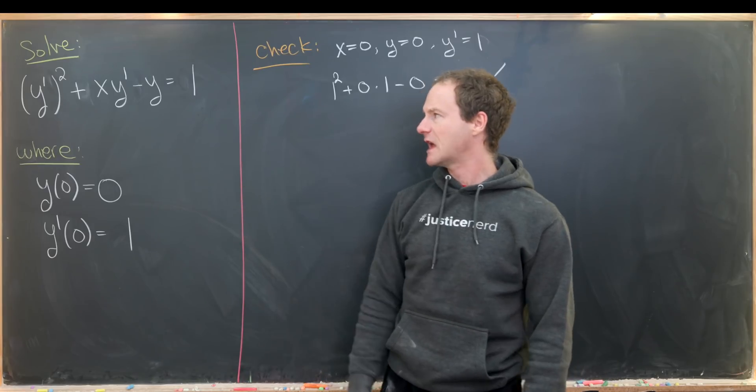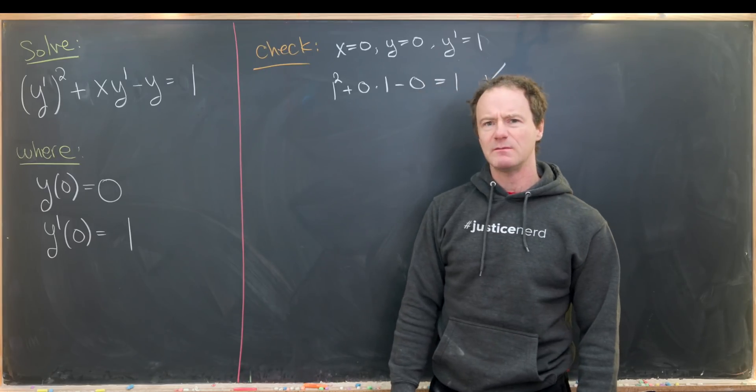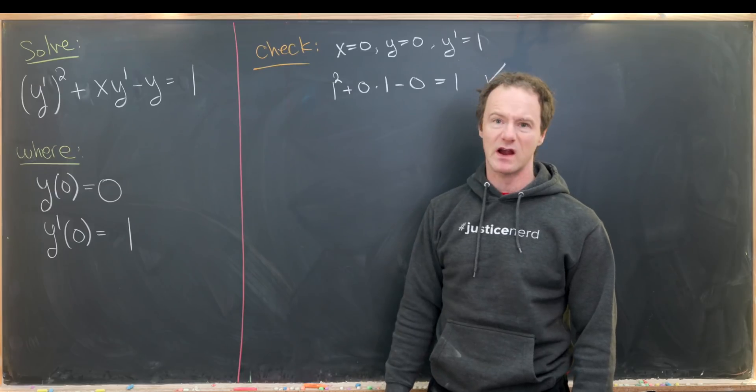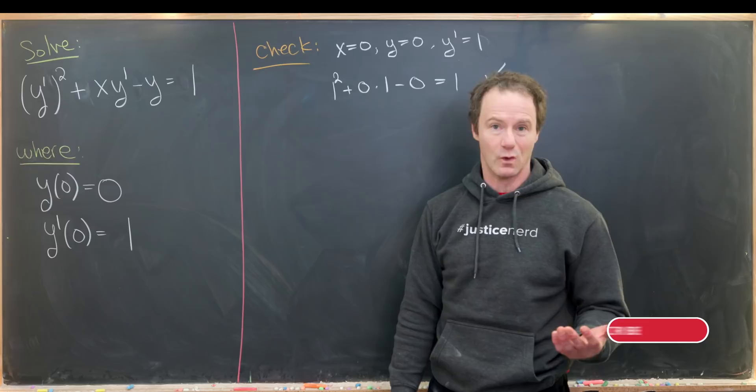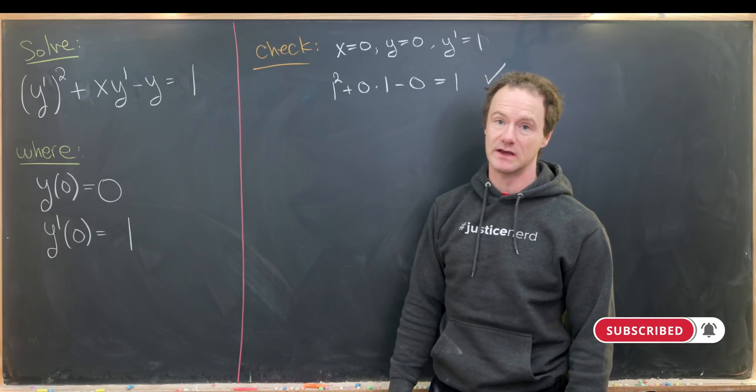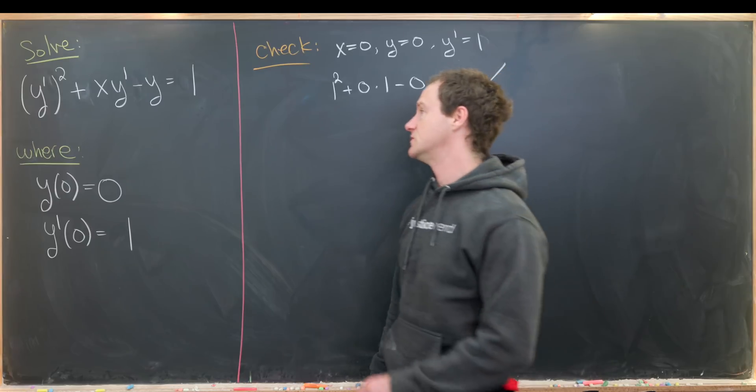Maybe looking at it a little bit, keeping motivation on the fact that we have a y' squared there and we'd like to reduce the order maybe, we could take the derivative of this entire equation and see what we get. So let's do that.